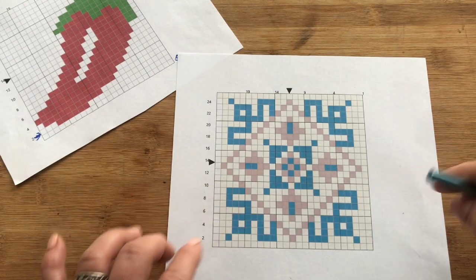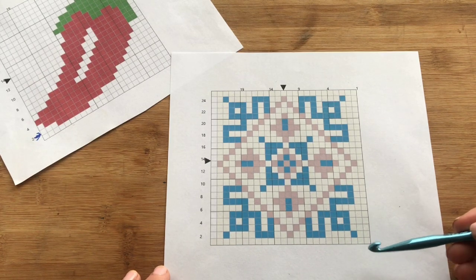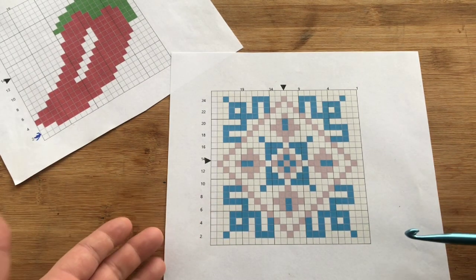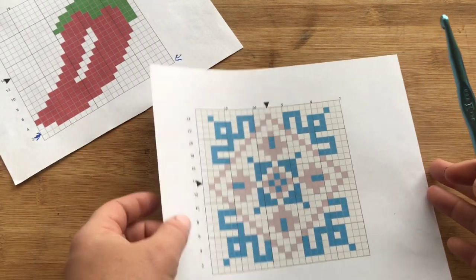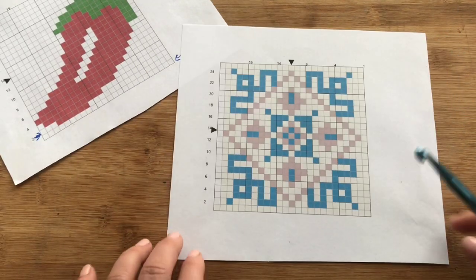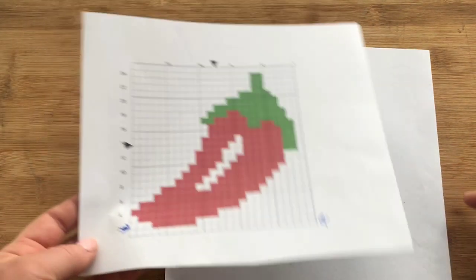It's a C2C calculator, so you can work your swatch and then put your numbers in of how many stitches per inch you have. That'll tell you exactly how big your blanket will be according to the hook size and your yarn size that you're using.